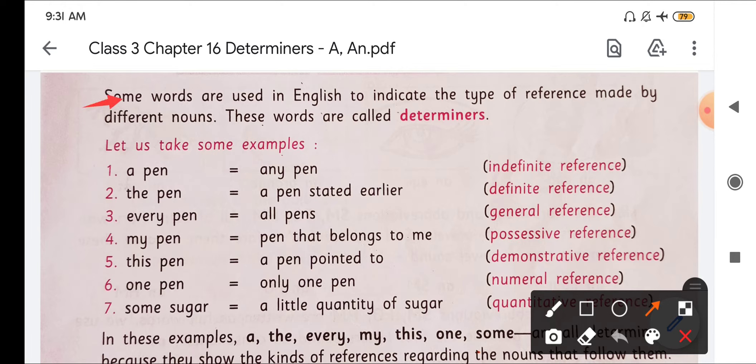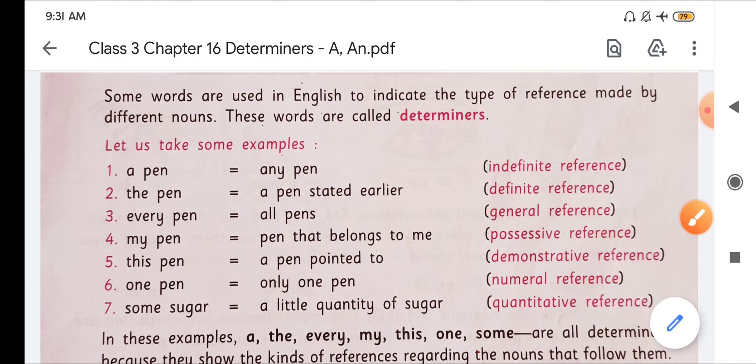Some words are used in English to indicate the type of reference made by different nouns. These words are called determiners. So to indicate something, determiners are used. So we will see the first one.